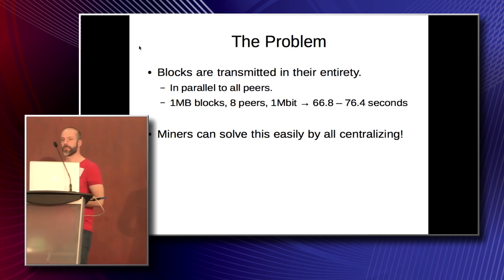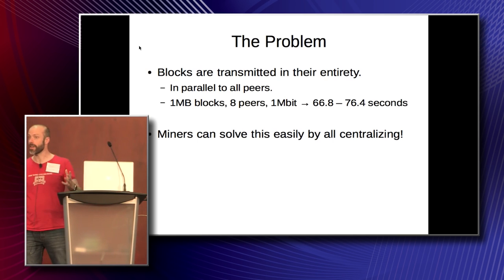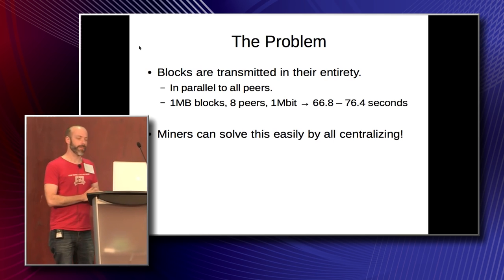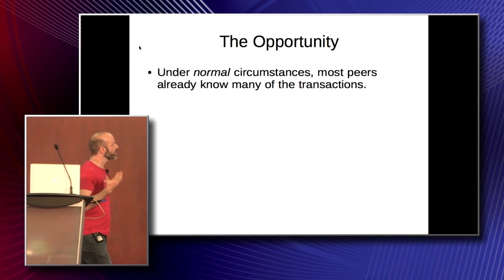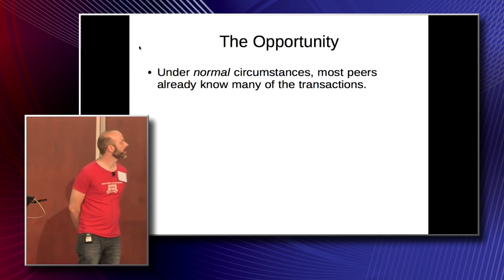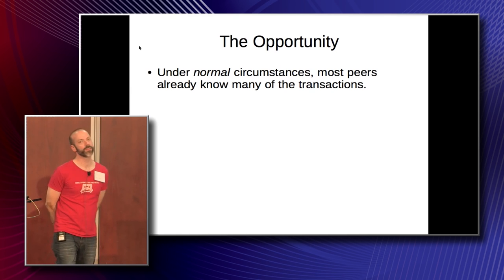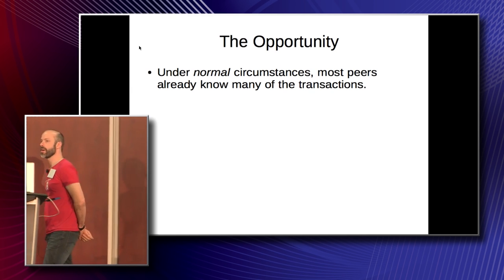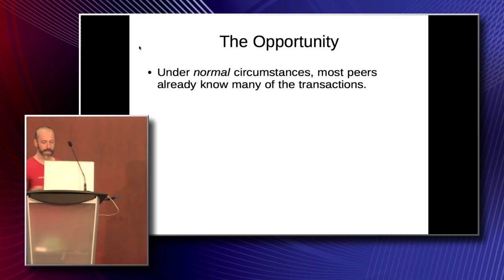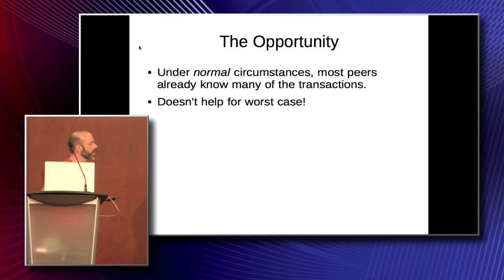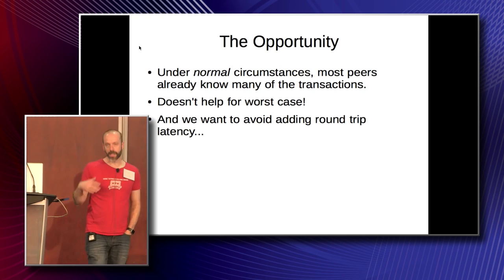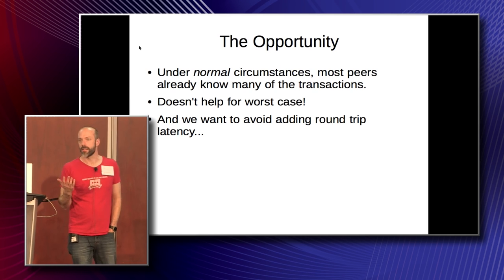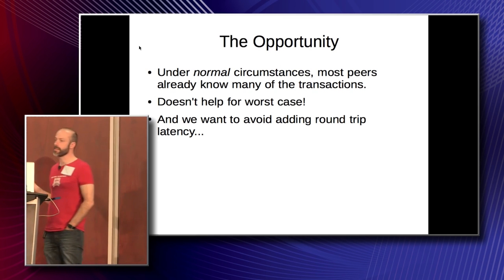Miners can solve this problem of slow block transmission by centralizing and all using the same pool. That's not necessarily desirable, so it'd be nice if you could take advantage of some of the redundancies in the block. Under normal circumstances, most of the contents of the block is known to the peers. It doesn't help for worst case — you can always create a block that no one's seen before — but it does help for the normal case. A naive approach like sending TX IDs could add round trip latency, so you want to avoid that.